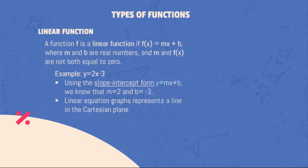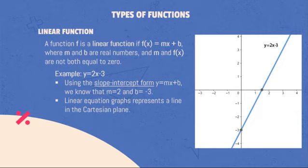For example, y = 2x - 3. Using the slope intercept form y = mx + b, we know that m = 2 and b = -3. Linear equation graphs represents a line in the Cartesian plane. The figure shows the graph of function 2x - 3.